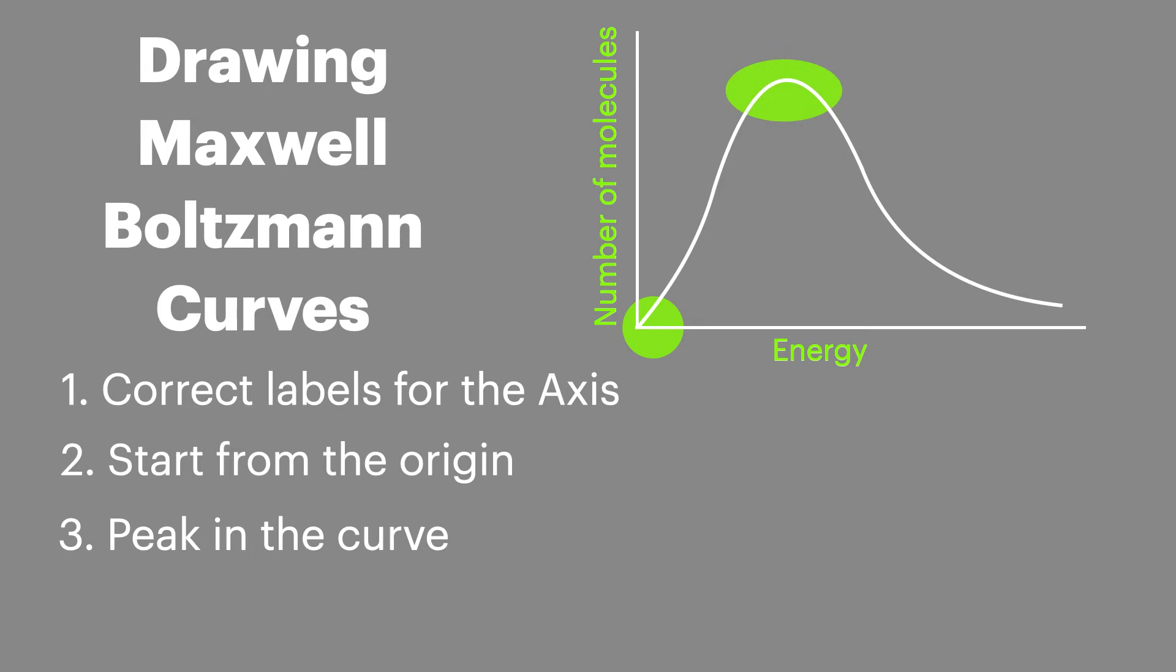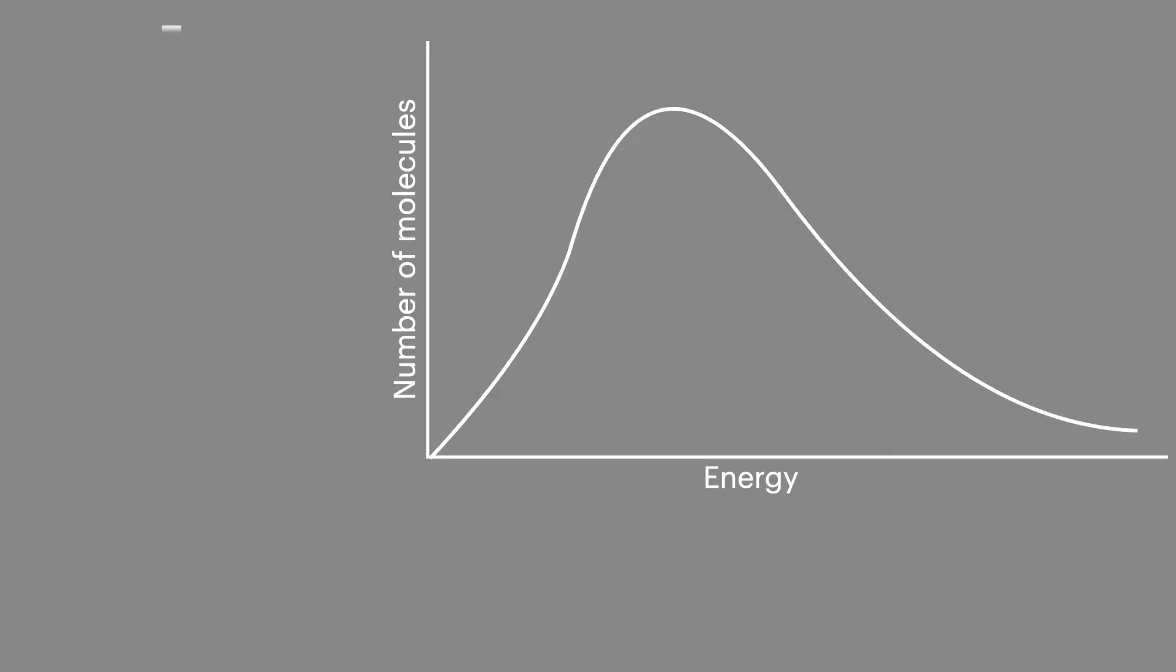Third, make sure your peak is clearly defined in the curve. And finally make sure your curve flattens out near the x-axis. This is called an asymptote. It's important to show the potential for molecules with more energy. If we lower the temperature of the molecules this alters the shape of the curve.